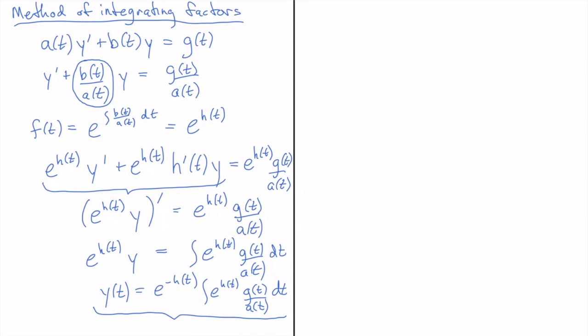So let's look at an example then. Let's look at the example. T y prime plus 2y equal 4t squared. So the first step as I described previously is to divide through by the coefficient on the y prime.